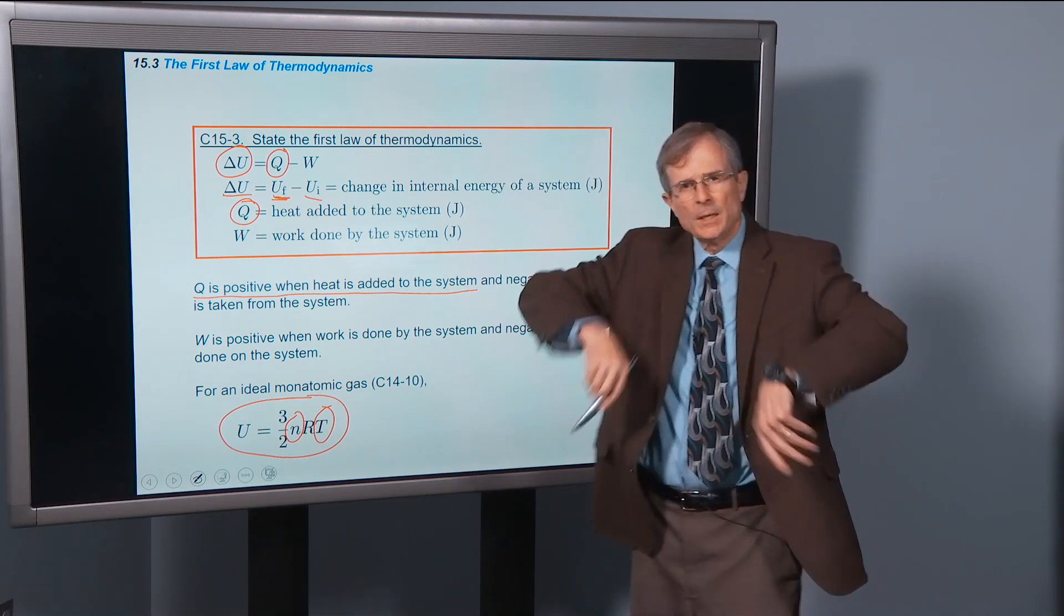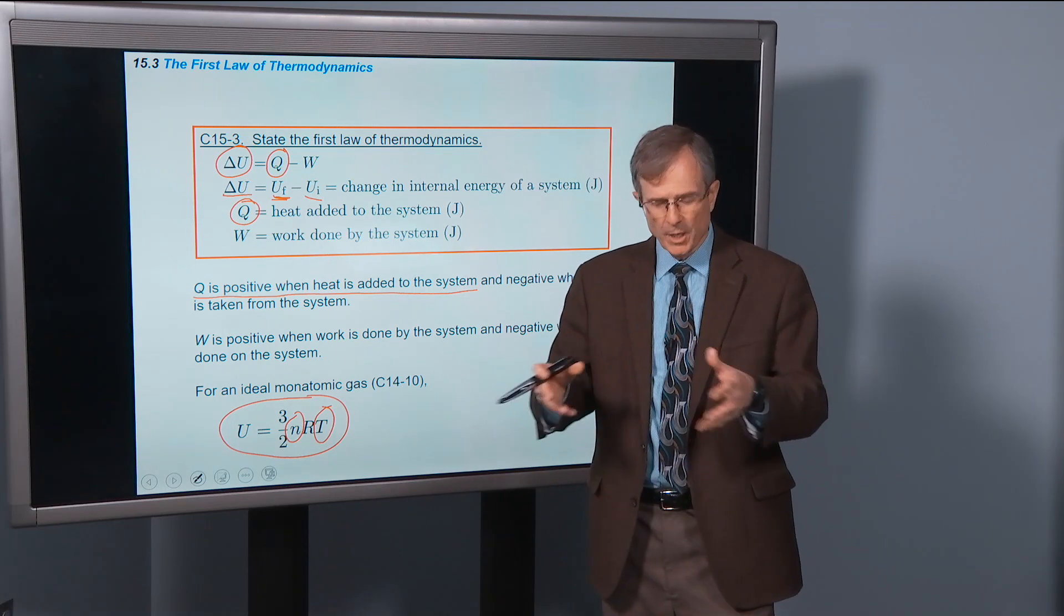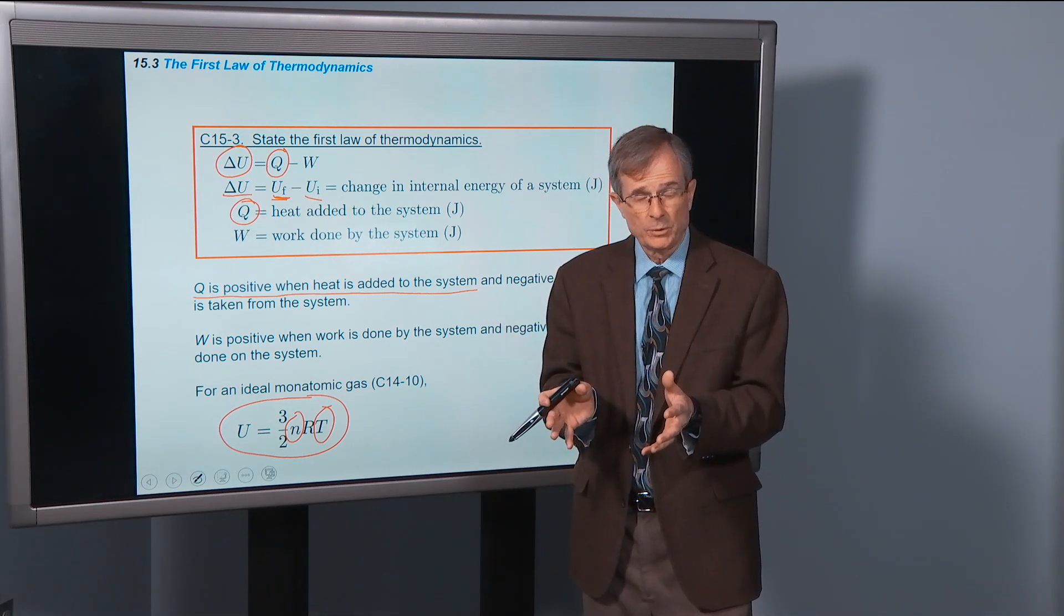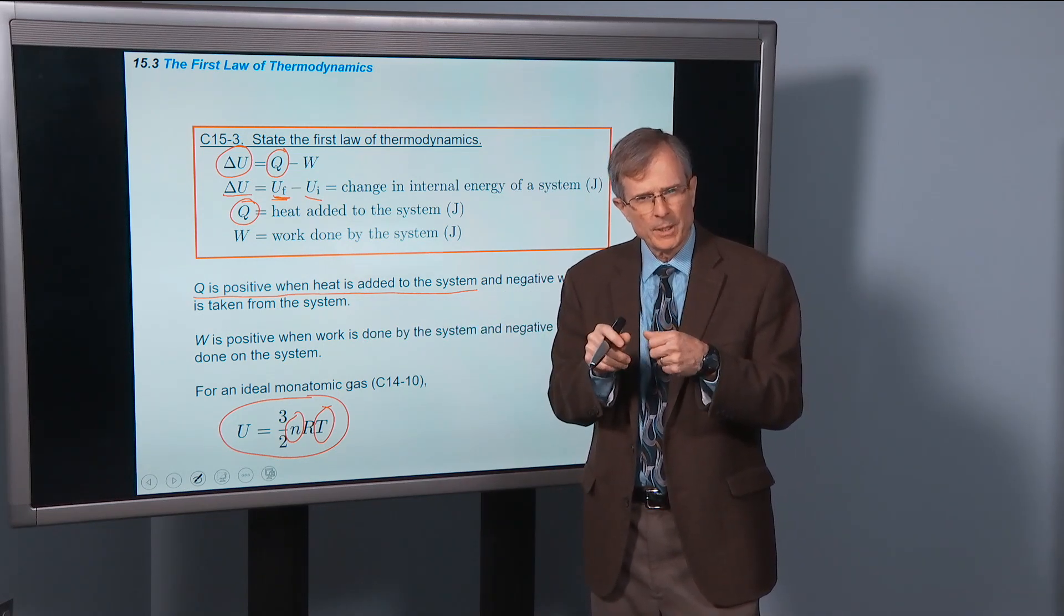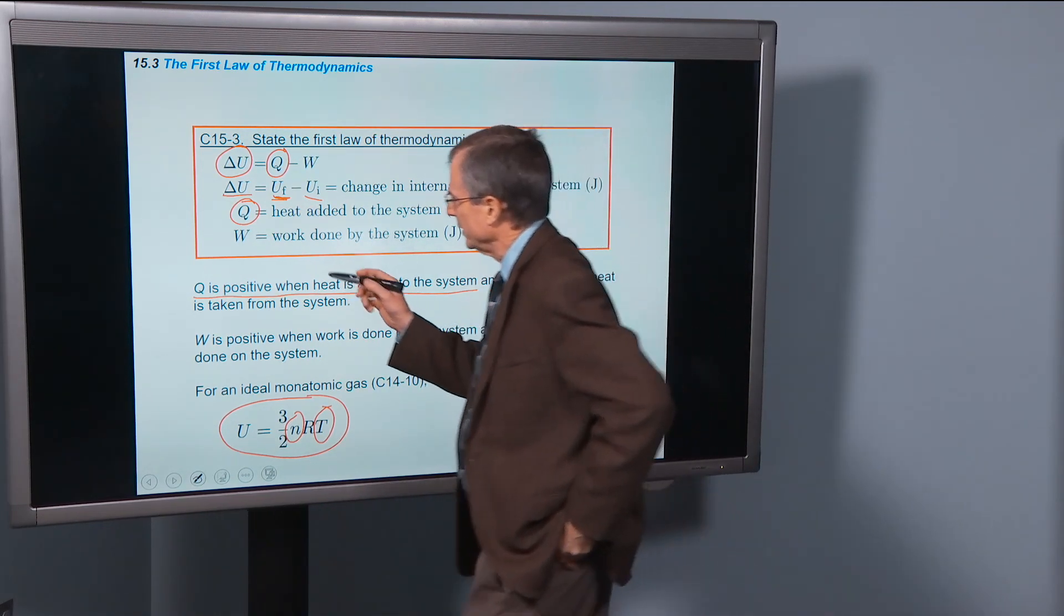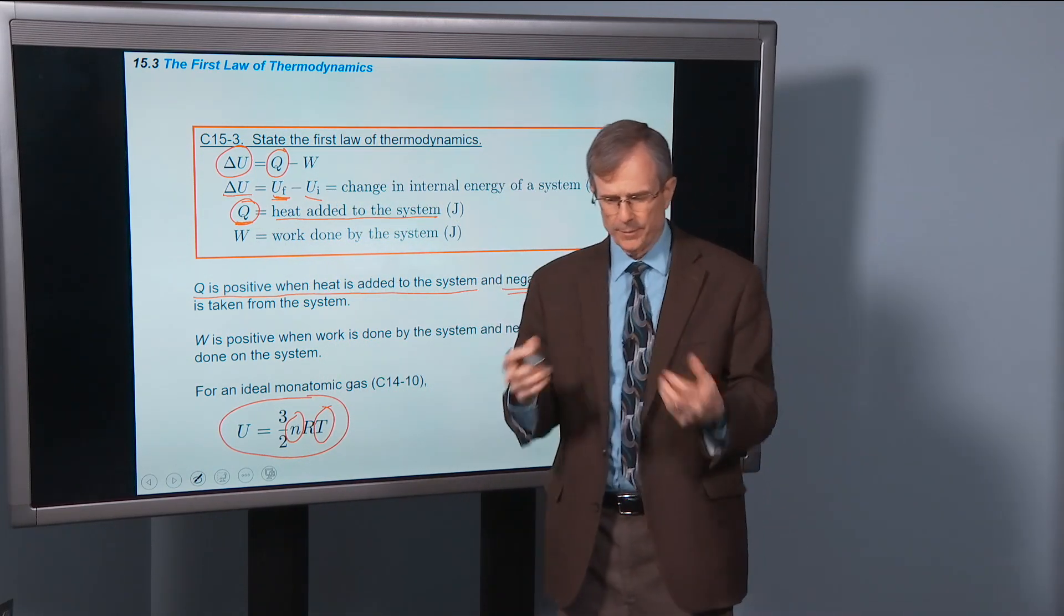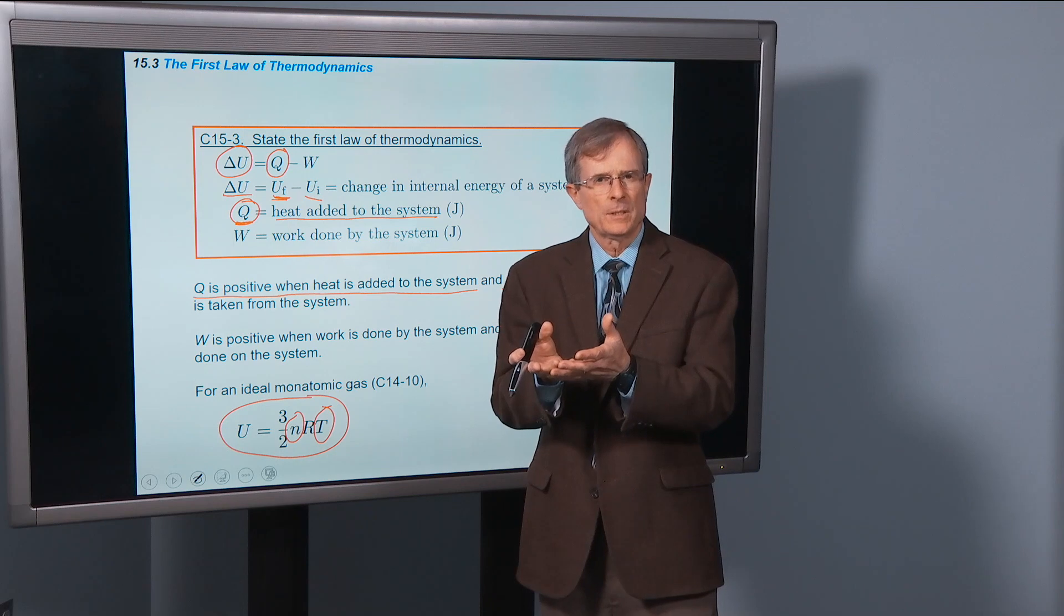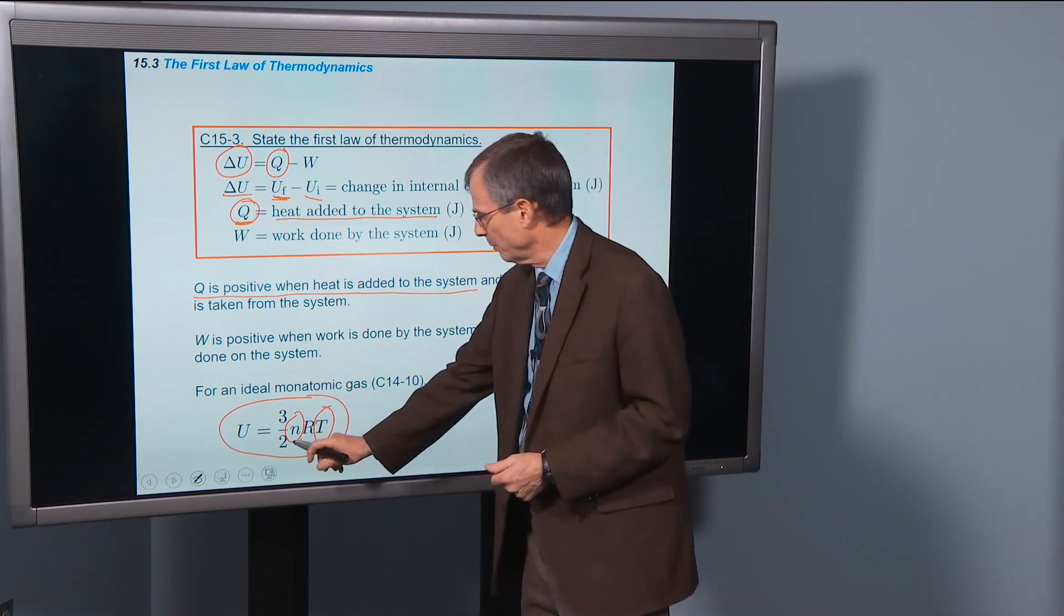But suppose you take heat away from the system. Suppose you turn the burner off on that hot air balloon and let some heat leak through the thin walls. Then heat will be leaving the system, and that should decrease the amount of random thermal energy. In that case, Q would be negative. All you need to remember is that Q is the heat added to the system. Adding heat will increase the internal energy and temperature, as long as the number of moles hasn't changed.